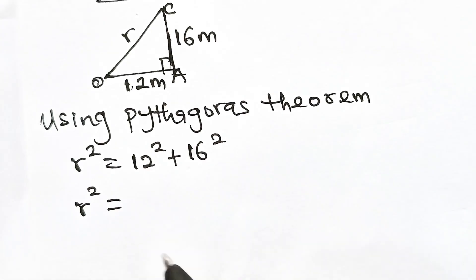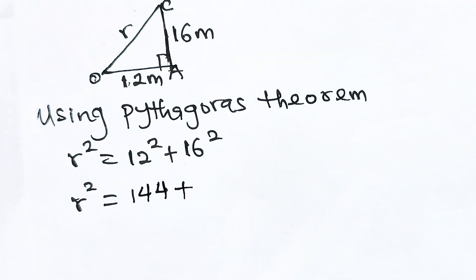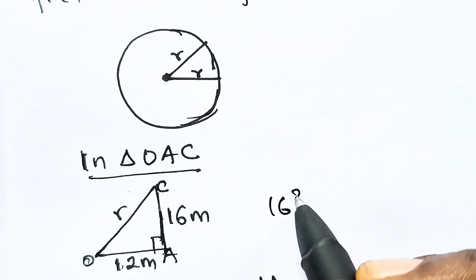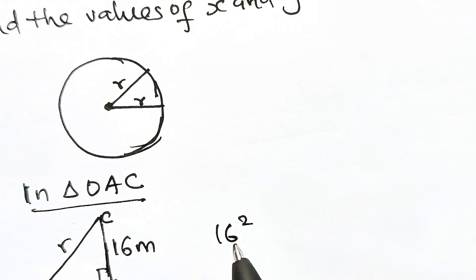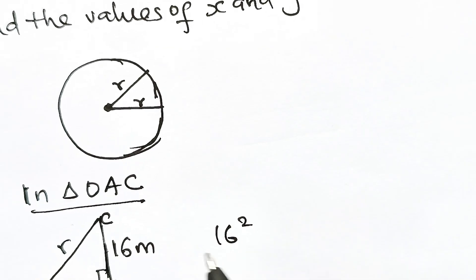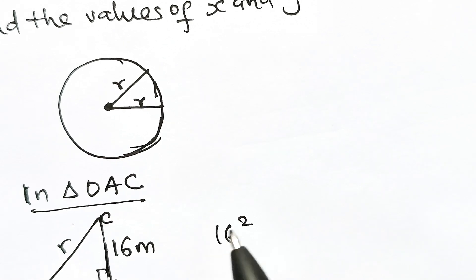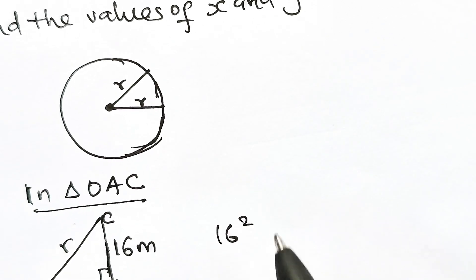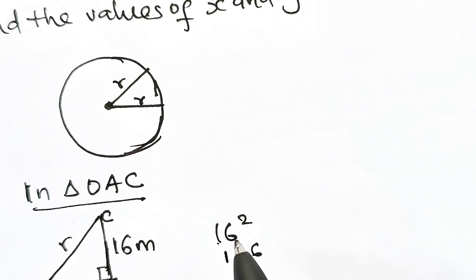Now let's get 16². I'm going to use a method to do this. So 16² is 256.